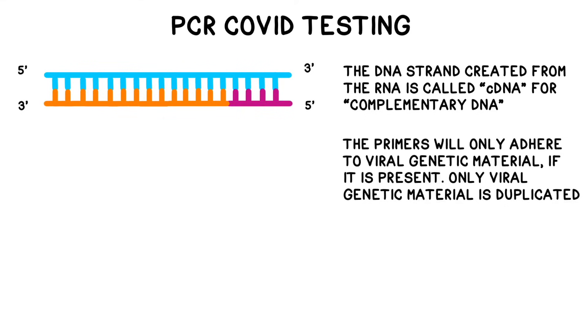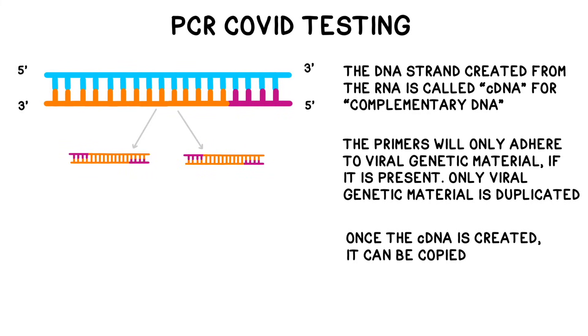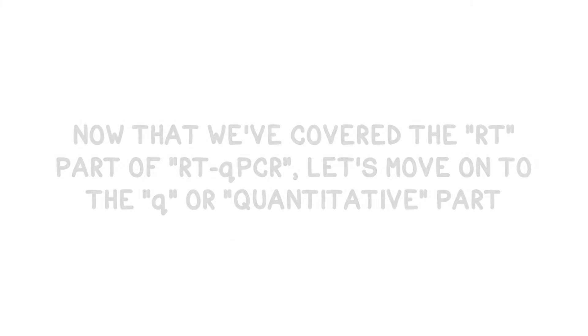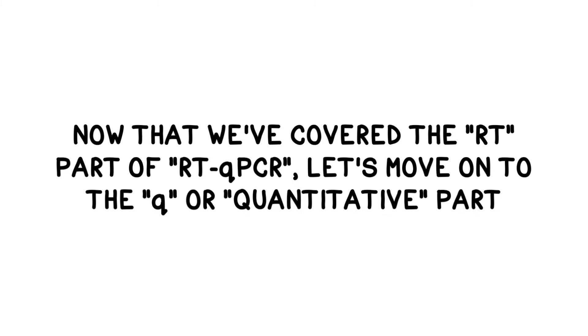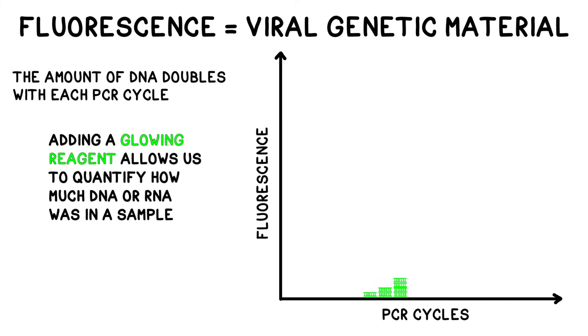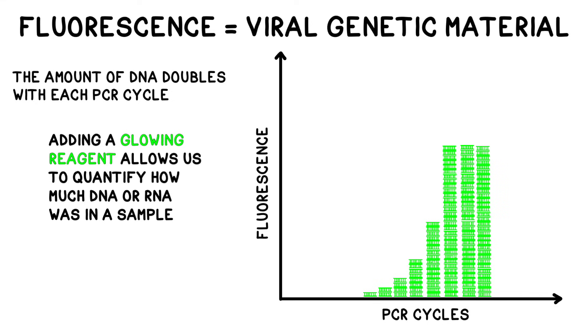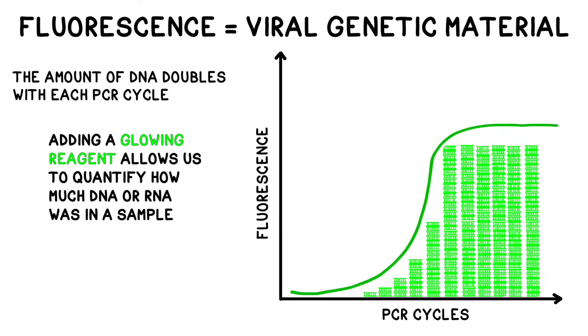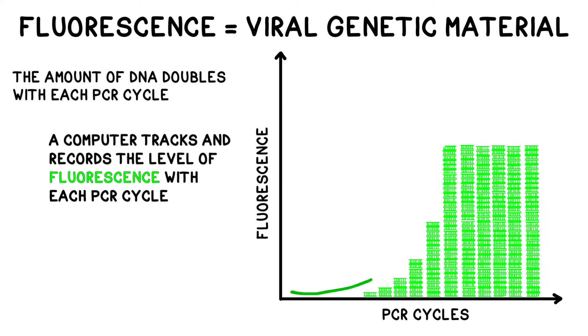Only the viral genetic material, if it's present, will be duplicated. Once the cDNA is created from the RNA, it can be copied using PCR just like regular DNA. We can't tell whether the viral genetic material is present in the tube just by looking at it, so this is where the Q, or quantitative part, of RT-qPCR becomes key. Like standard PCR, RT-qPCR makes copies of a specific region of interest, but it also measures the amount of genetic material in a sample by using fluorescence. Adding a glowing reagent into the DNA allows a machine to measure or quantify how much DNA is in a sample. As the amount of genetic material grows exponentially, a computer measures and records the level of fluorescence on a chart.